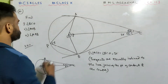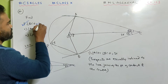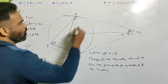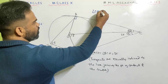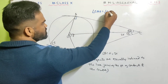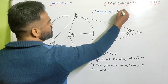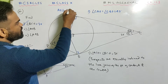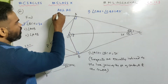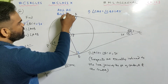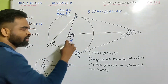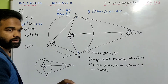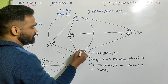So BCO is 30 degrees. Also, angle CAO and angle CBO are both 90 degrees because AO is perpendicular to AC and BO is perpendicular to BC — the tangent and radius at the point of contact are perpendicular to each other.